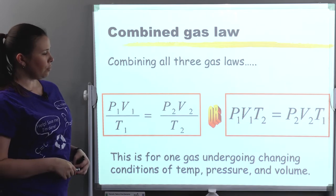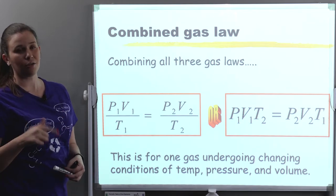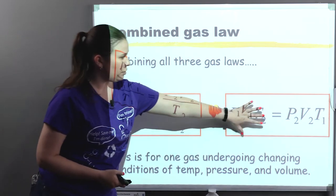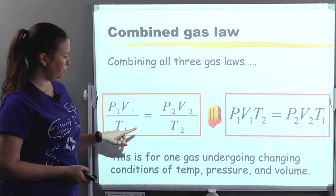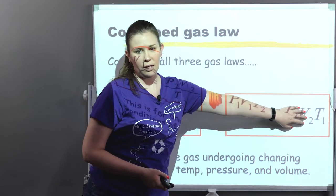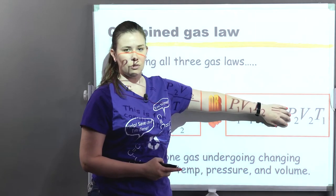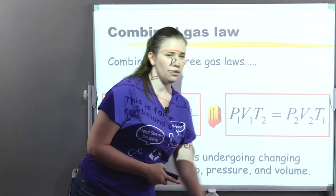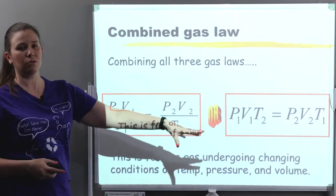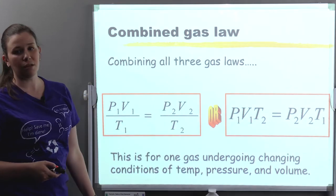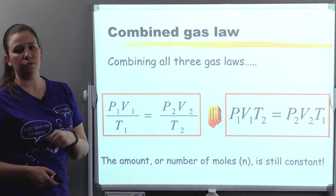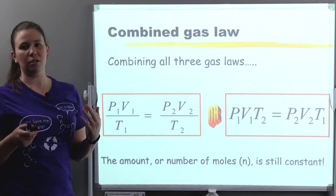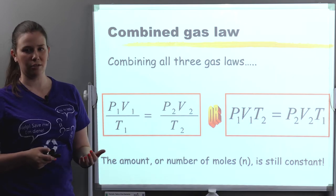We can also cross multiply this out — I know fractions aren't everybody's favorite. So we can go P1 V1 T2 on the left and P2 V2 T1 on the right. This is how I'll work the problems, but you just have to be careful that your temperatures are actually flipped when you're using that version of the equation. Notice the one thing we still haven't changed: the number of moles. How much gas still has to remain constant.